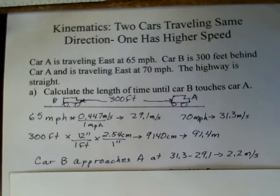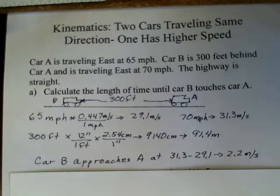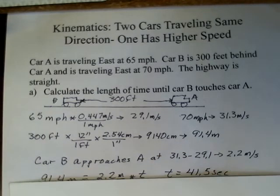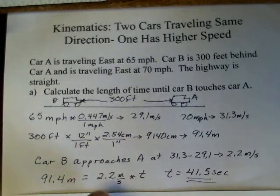Car B is approaching car A. If we take the view of a passenger in car A — ignoring special relativity at these low speeds — we can find the rate of approach for car B. It's the difference in their two speeds: 31.3 minus 29.1, so car B is approaching car A at 2.2 meters per second. Using distance equals rate times time, 91.4 divided by 2.2 gives us 41.5 seconds.